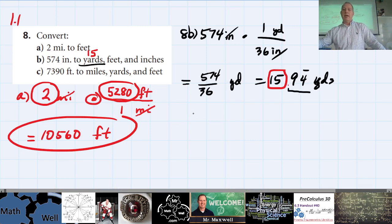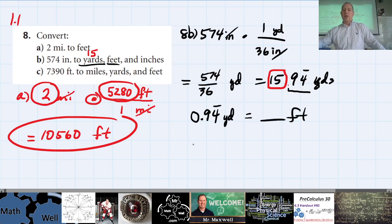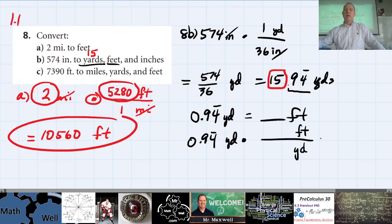The secondary calculation is: take 0.94̄ repeating yards and convert it to feet. We know one yard equals three feet, so we multiply 0.94̄ repeating yards by 3 feet per yard.